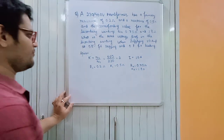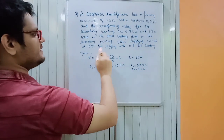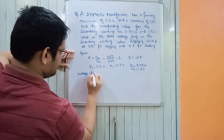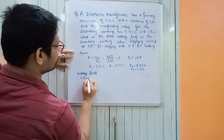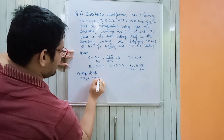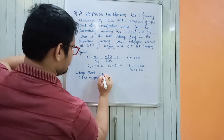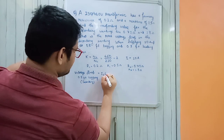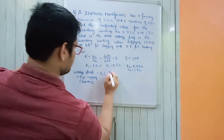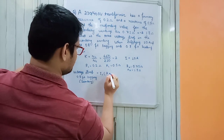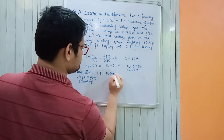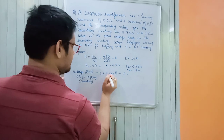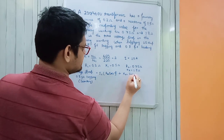Now we put the formula to find the voltage drop in the secondary winding when supply current is 10 ampere at 0.8 power factor lagging. The voltage drop formula is: I2 × (R02 × cos φ₂ + X02 × sin φ₂).